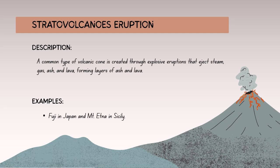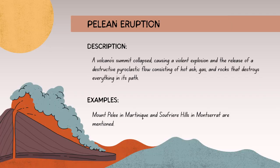Stratovolcano eruptions, also known as composite volcano eruptions, are characterized by explosive eruptions due to the presence of viscous magma. These volcanoes are typically tall and steep-sided, built up by alternating layers of solidified lava, ash, and volcanic rocks. Stratovolcanoes often produce pyroclastic flows, ash clouds, and lava flows during eruptions. The explosive nature is attributed to the magma's high silica content, which makes it more viscous and prone to pressure build-up.